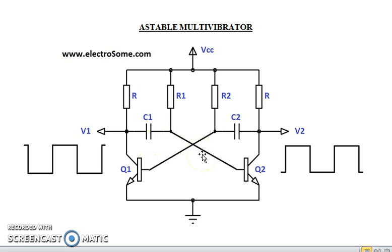This process continues and produces a rectangular wave like this, either at the collector of the on transistor or at the off transistor. So like this, on and off states are alternately produced without using any external signal. So this type of oscillator is called a free-running oscillator.